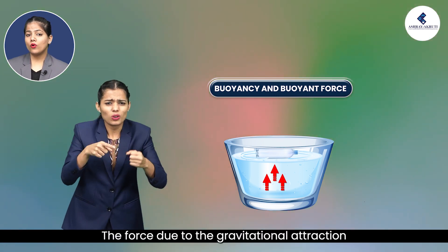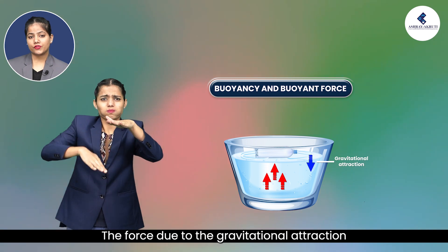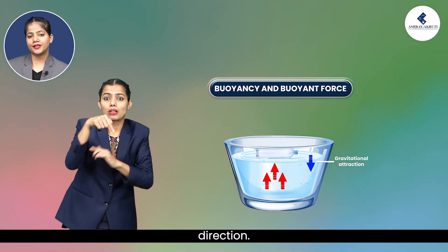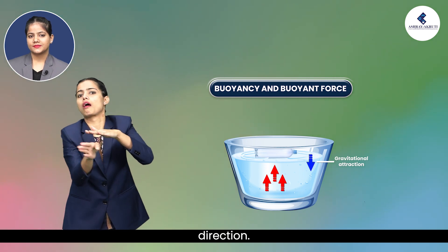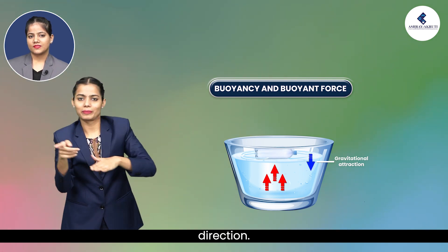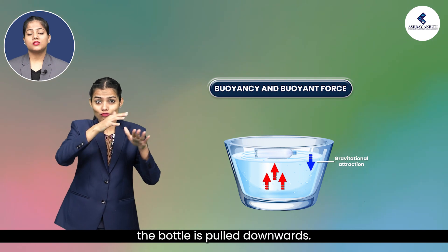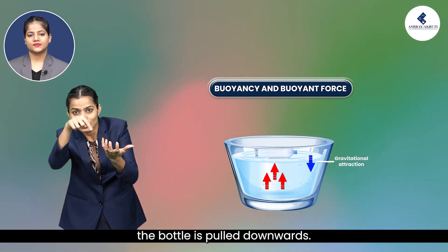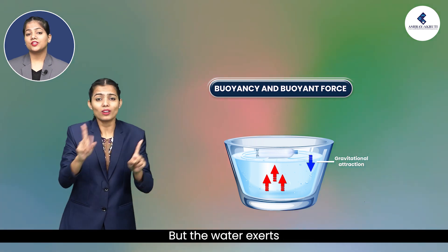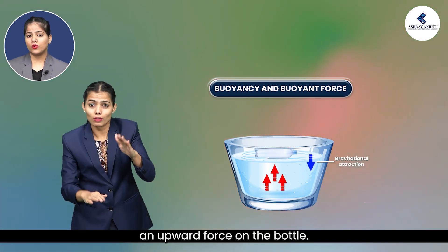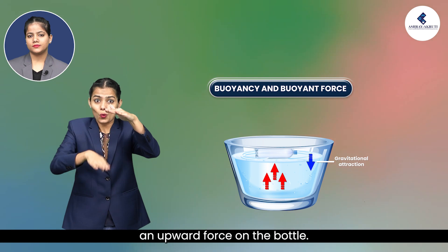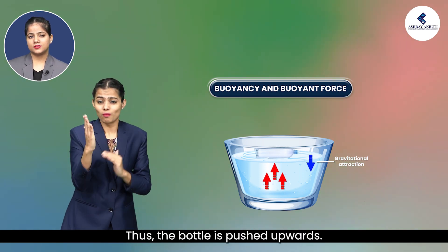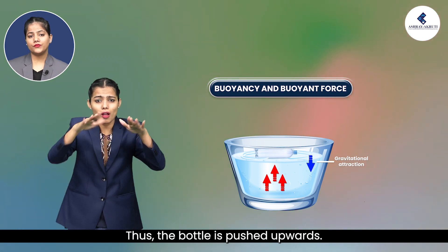The force due to the gravitational attraction of the Earth acts on the bottle in the downward direction. Because of this, the bottle is pulled downwards. But the water exerts an upward force on the bottle. The force exerted by the water on the bottle is greater than its weight, and thus the bottle is pushed upwards.